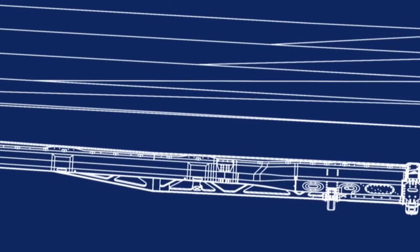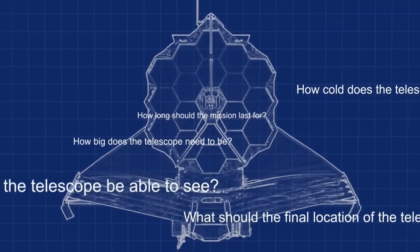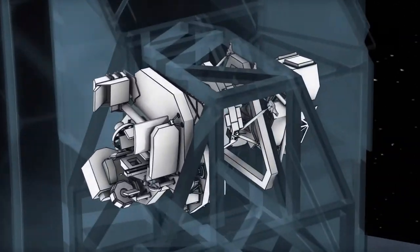Before any designs for Webb could be created, certain criteria needed to be established: how big could it be, how cold should it be to achieve the scientific objectives, and where to put it so it could get that cold. We knew we wanted international partners on Webb, just like on Hubble — the European Space Agency and the Canadian Space Agency. And because this is a NASA-led mission, NASA wanted the bulk of the science and technology, so we were going to be building the telescope and some of the science instruments.